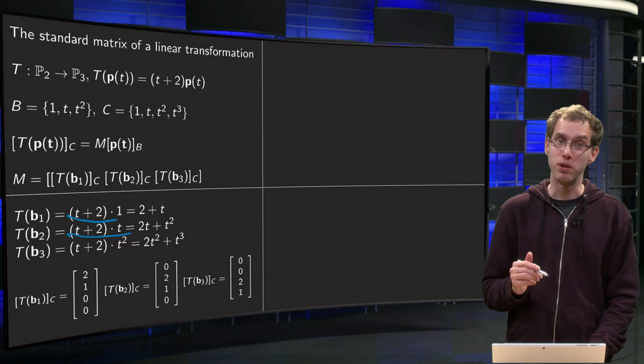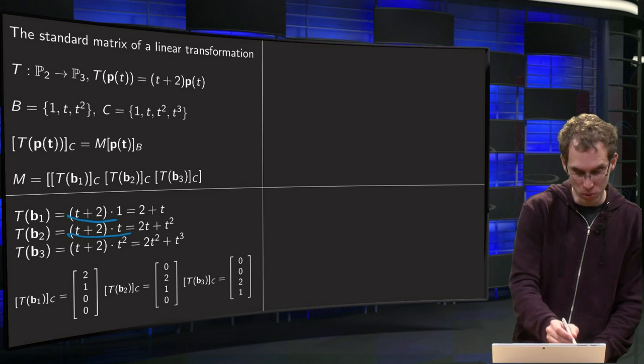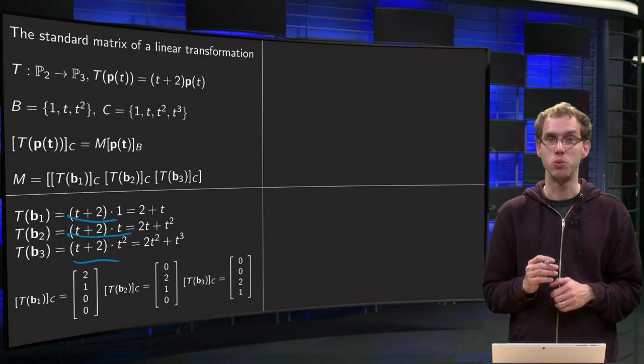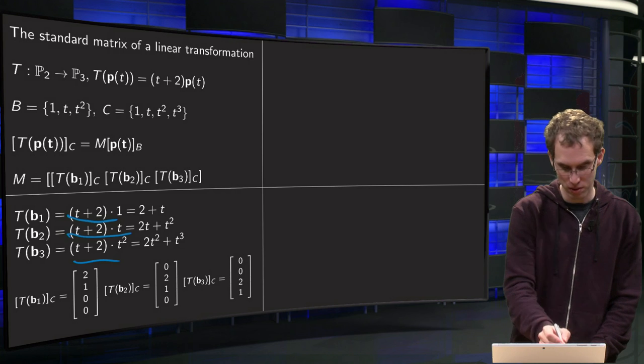b₃ equals t². So the T(b₃) equals (t + 2) times t². So 2 times t² plus t³ over there.